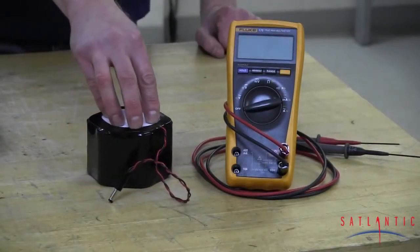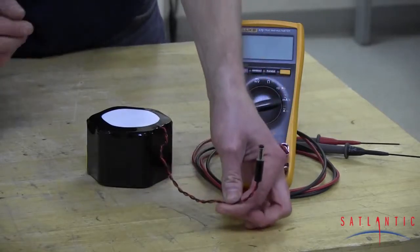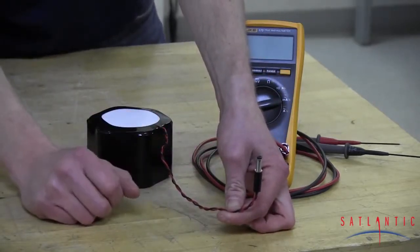This is our replacement battery for the Satlantic C-FET. Following this twisted pair of conductors, we come to the barrel connector. This is what you're going to grasp when installing and uninstalling the battery.